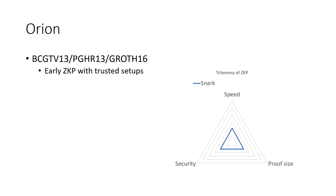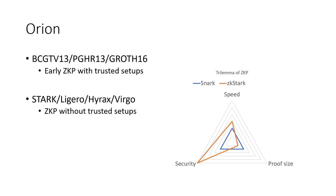Before we go into our work, let me introduce some background information. Here is a list of early-stage ZKPs. This first generation of Zero-Knowledge Proofs requires a trusted setup, and their speed is not so good. Several years later, there is a second generation of Zero-Knowledge Proofs. They removed the trusted setup, so the security is much higher than the previous generation. They also improved the speed, but the proof size is much larger than the previous one.